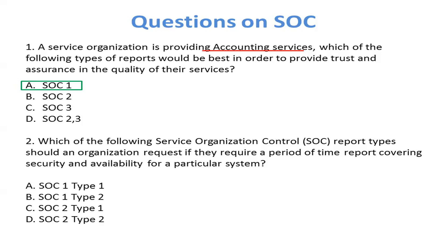Question 2: Which of the following service organization control report types should an organization request if they require a period-of-time report covering security and availability for a particular system? The main keywords here are security and availability — that means cybersecurity or IT. And when we also see 'period of time,' that means Type 2. So the correct answer is D, SOC 2 Type 2.